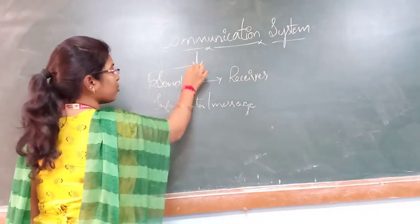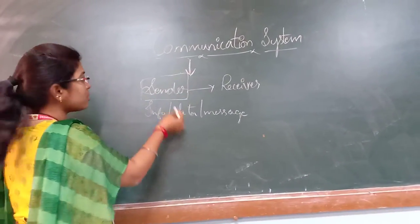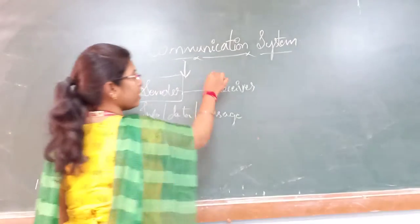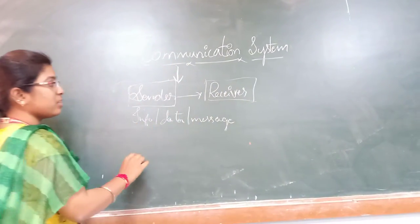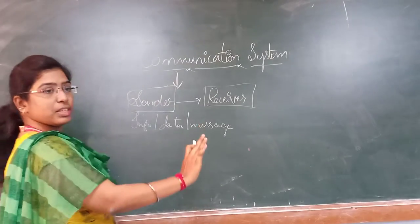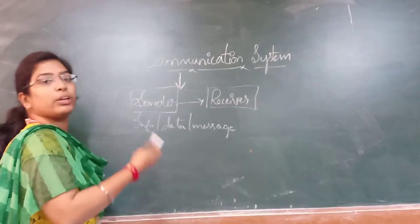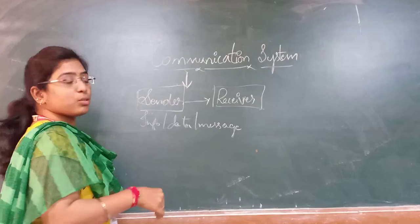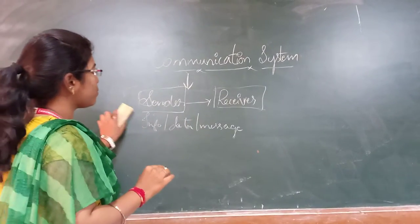We are sending some information, data or message from the sender side to the receiver end. So what happens in this communication? Just we are sending information to the receiver, but in between, what is going to happen? What is the actual process of this communication system?